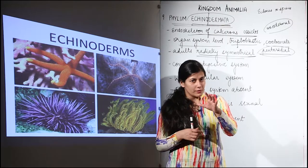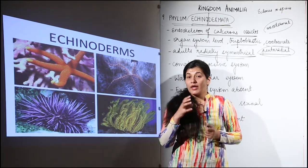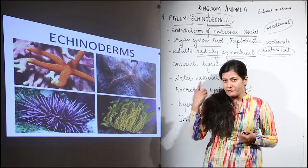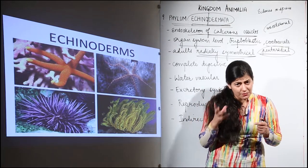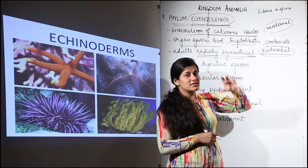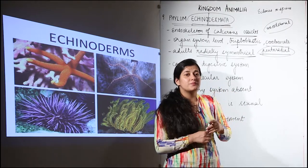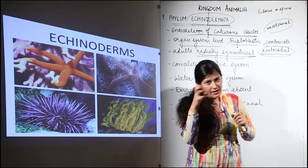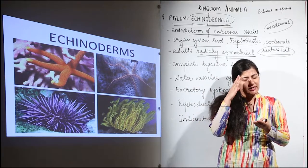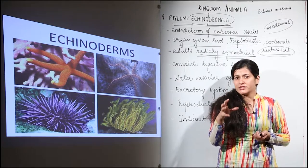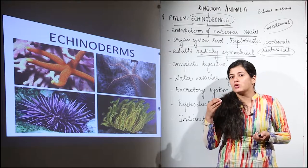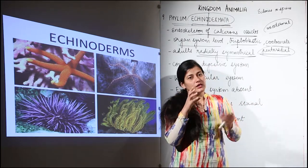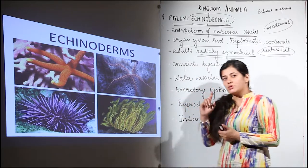Those earlier phylums — Cnidaria and Ctenophora — were radially symmetrical. So it may baffle you that the phylum in the ninth position, coming after Mollusca and Arthropoda, still shows radial symmetry. But you don't need to be confused, because what places them at the ninth position is that their larva — the brachiolaria larva — is bilaterally symmetrical. The adult shows radial symmetry while the larva shows bilateral symmetry, making them close to the chordates.